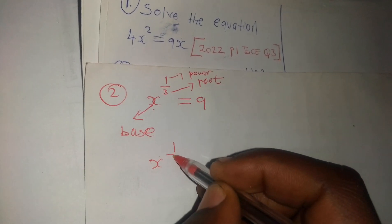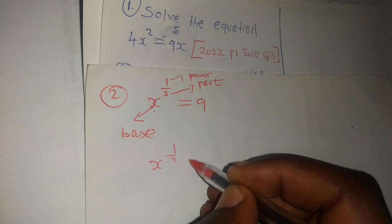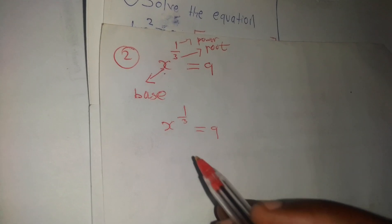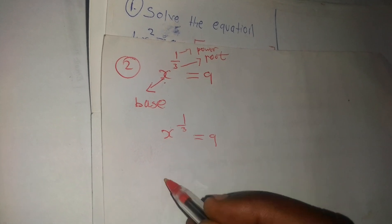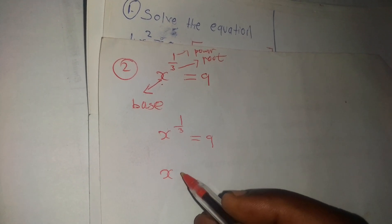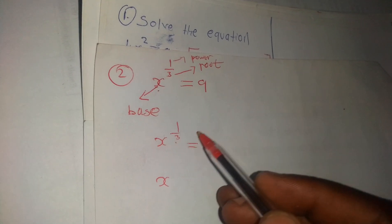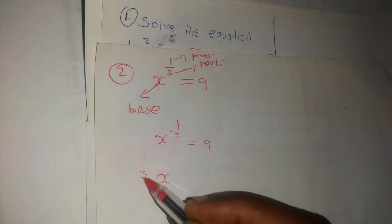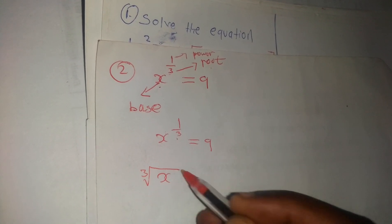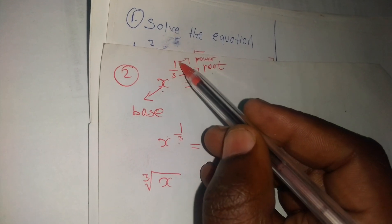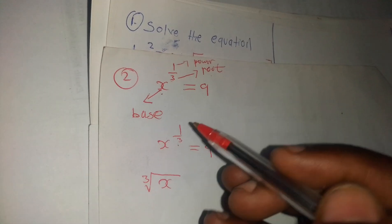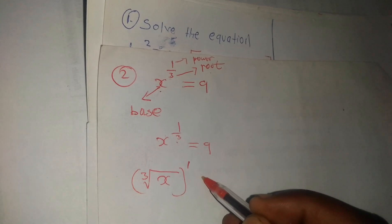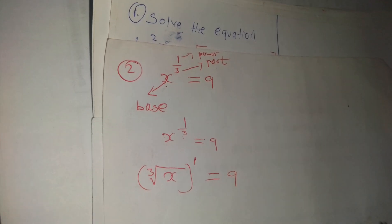Let's say we have x to the power of 1 over 3 equals 9. What we are going to do — since x is the base, I want to maintain the base. This 3, remember we are saying 3 is the root, so it will become a cube root. Then we have the power of 1, so we can put everything to the power of 1. Then it equals 9.